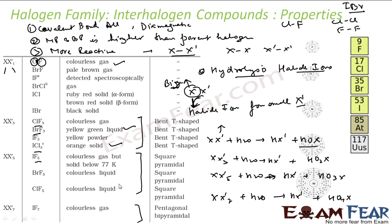These shapes can also be derived using VSEPR theory. To summarize the properties of interhalogen compounds: they are more reactive than parent halogens; they all have covalent bonds; they have higher melting and boiling points; on hydrolysis, they give halide ions from the smaller halogen, and from the bigger halogen, they give hypohalite, halite, halate, or perhalate ions.